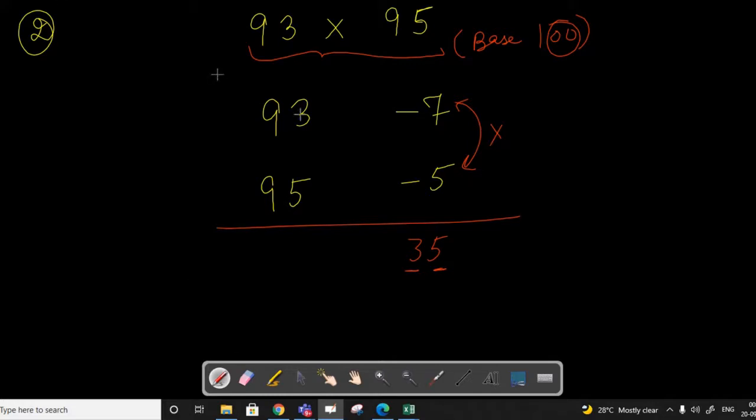Now let us solve these two numbers diagonally. 93 minus 5 equals 88. So the answer will be 8835.